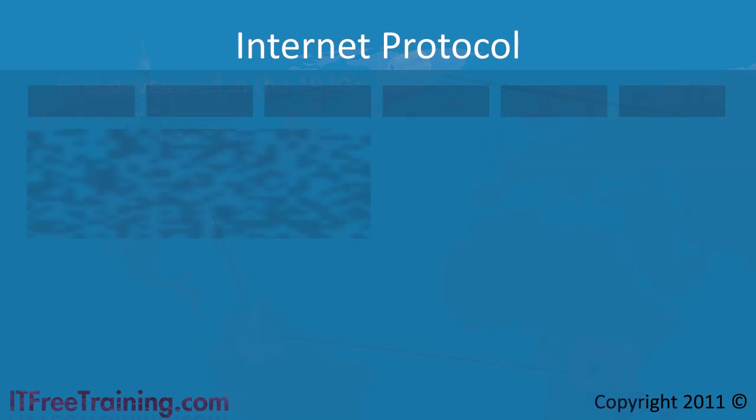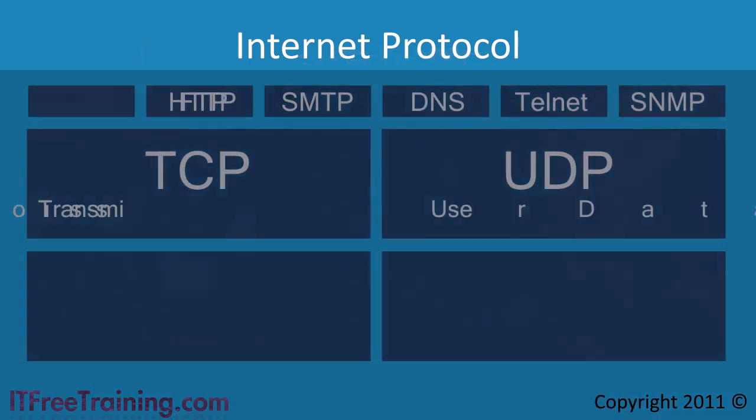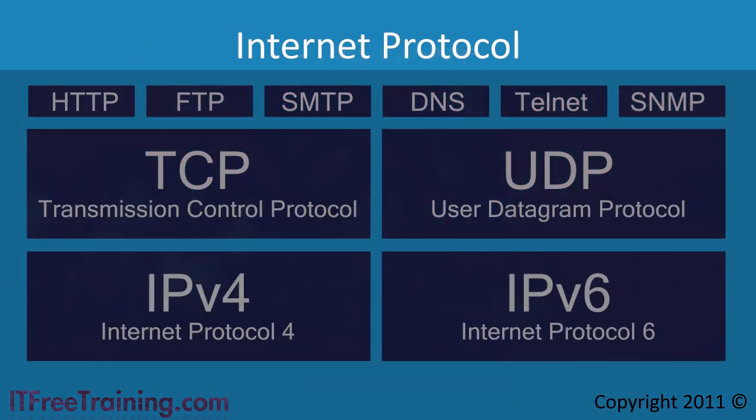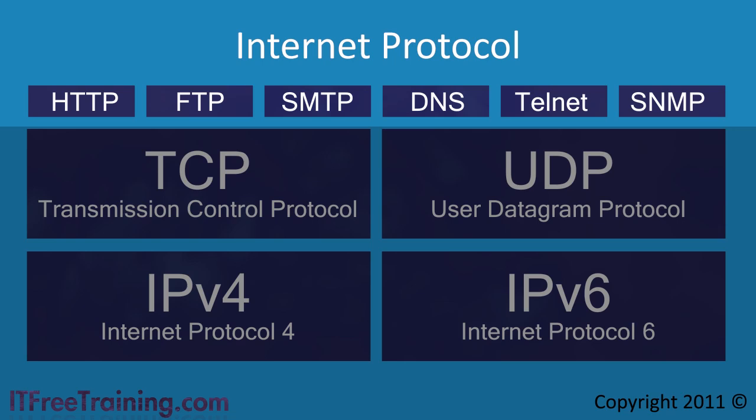The internet protocol consists of a suite of protocols that make it work. At the operating system level, first of all the type of service is selected. The service is not part of the IP protocol but uses the IP protocol to communicate on the network. For example, you may find services such as HTTP, DNS and SMTP at this level.